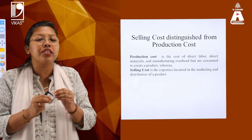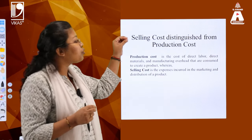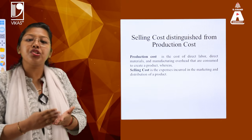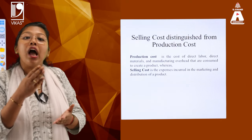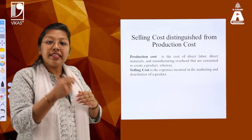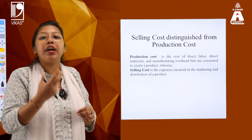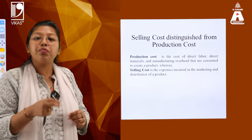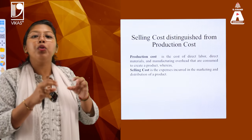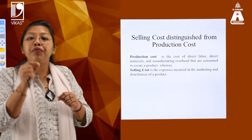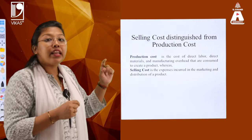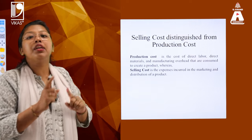Nowhere in economics is it described that production cost will include the selling cost and vice versa. If I say the 4 factors of production are incurring this much cost, I cannot say the same is going to happen for the selling cost. Selling cost might have advertising cost, distribution cost, and the cost of hiring people who are actually influencing the consumers to buy products. This is how selling cost and production cost differ from each other.